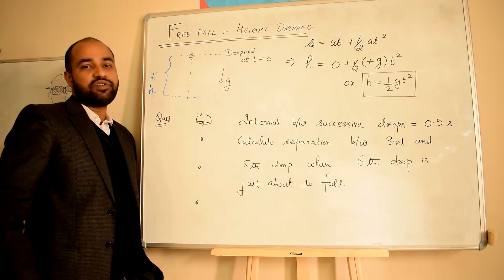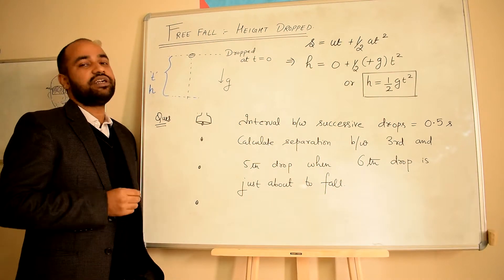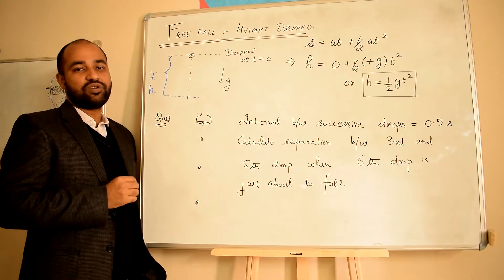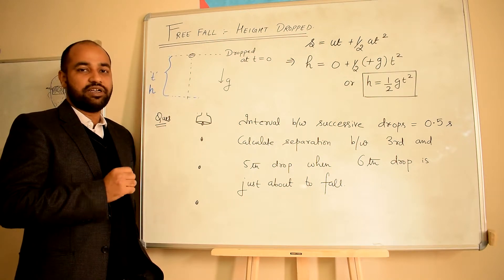You can see that this gives you the free fall equation: the height dropped in time t is h = ½gt².